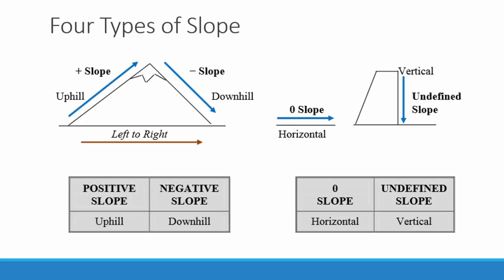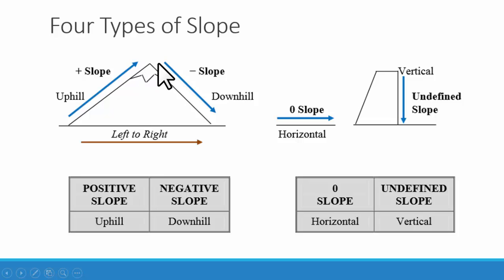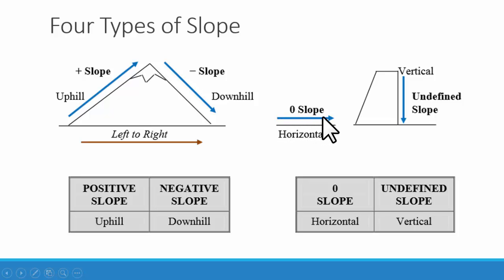There are four types of slopes. We will read our graph looking at it from left to right. If the line goes uphill from left to right, we have a positive slope. If the line goes downhill from left to right, it is a negative slope. A perfectly horizontal line has a slope of zero. A perfectly vertical line is said to have an undefined slope.